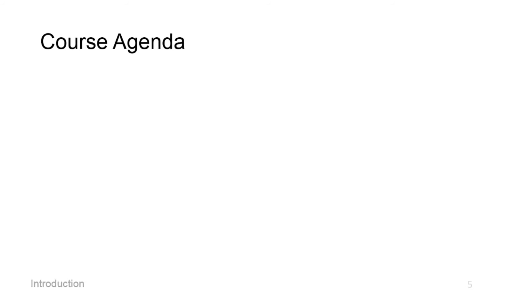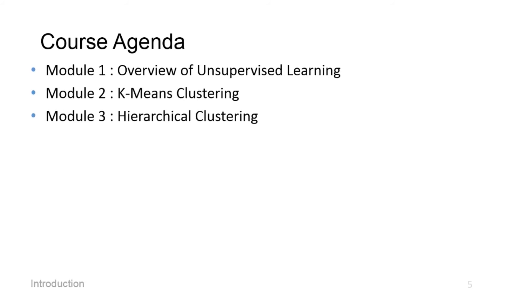Now let's look at the course agenda. The entire course is divided into five modules. Module 1 covers the basics of unsupervised learning. Module 2 covers K-means clustering. Module 3 discusses hierarchical clustering. Module 4 covers density-based clustering.